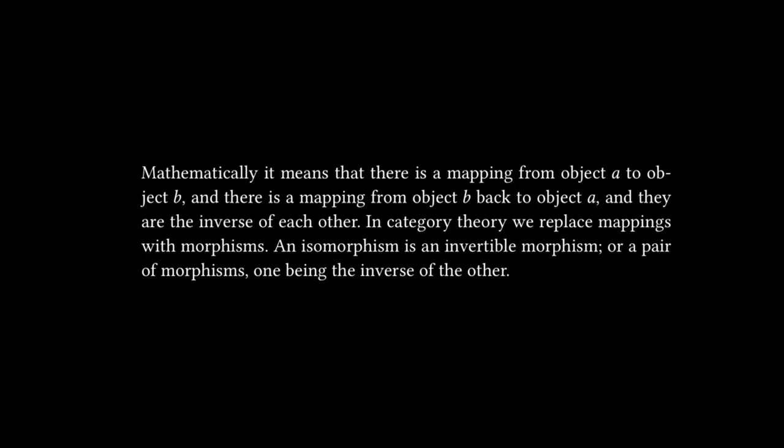Moving on to the fourth subsection, which is on isomorphisms. This is the part of the text that defines an isomorphism. Mathematically, it means that there is a mapping from object A to object B, and a mapping from object B back to object A, and they are the inverse of each other. In category theory, we replace mappings with morphisms, and isomorphism is an invertible morphism, or a pair of morphisms, one being the inverse of the other.